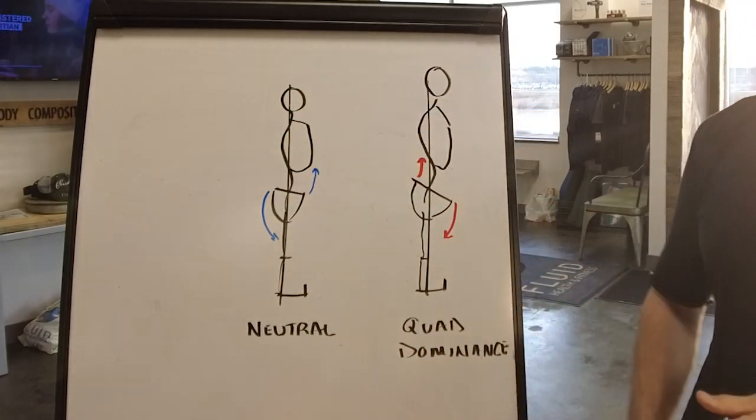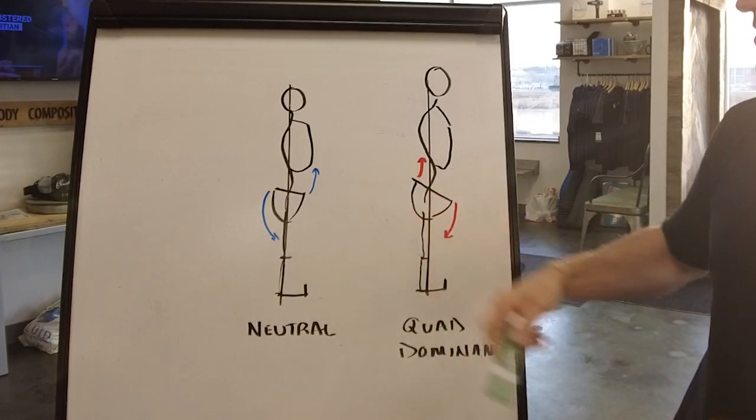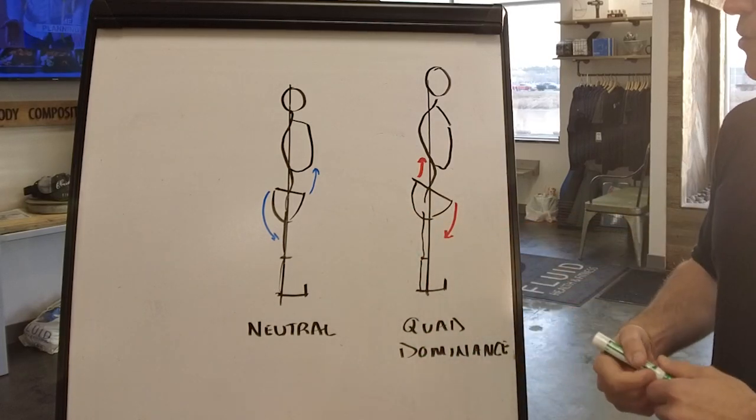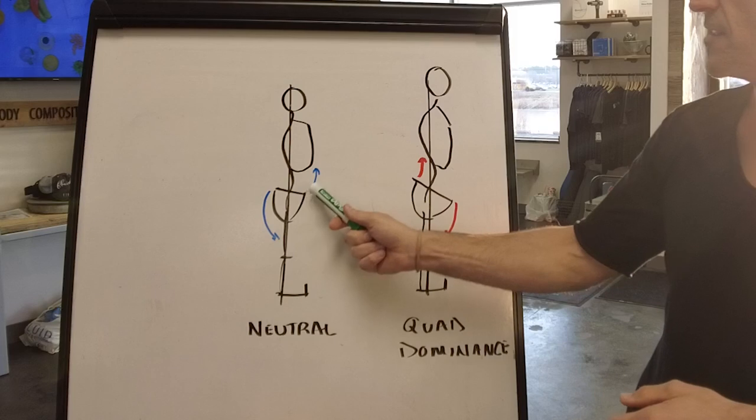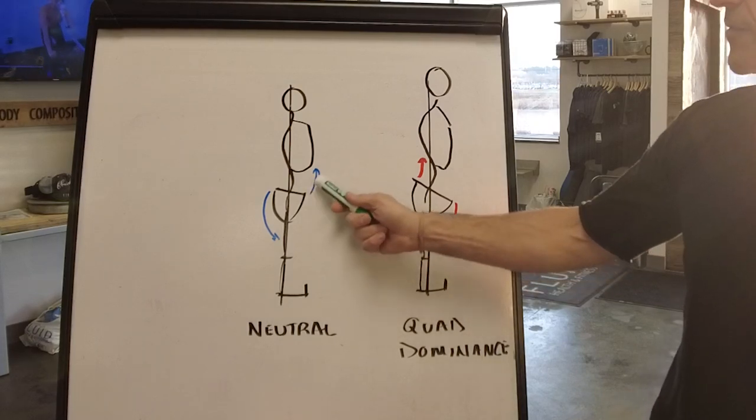Now, if the balance of tension between the abdominals and the glutes and hamstrings are sufficient, you can see these arrows. There's an upward pulling on the pelvis from the front side and a downward pulling on the pelvis on the back side.